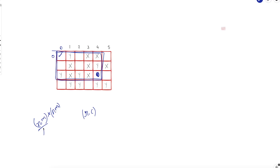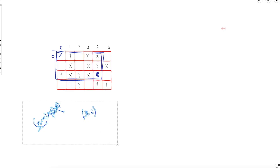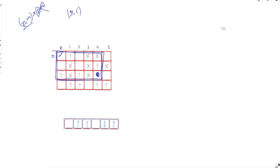We have two ways to optimize: skip iterating over all submatrices, or make the calculation of X and Y counts inside a submatrix faster. Skipping submatrices is harder. Instead, we'll optimize the counting step, which is easier, especially if you're seeing this for the first time. We'll compute the count of X and Y in a submatrix efficiently using 2D prefix sum.